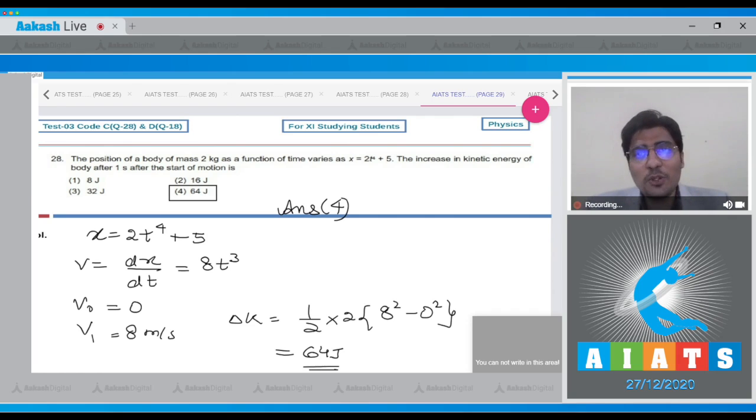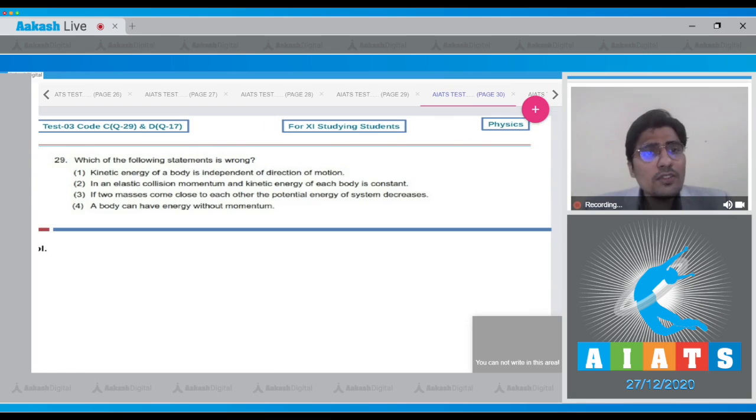Now, moving on to question number 29. Question 29 says, which of the following statement is wrong? So 4 statements are given to us. Kinetic energy of a body is independent of the direction of motion. Dear student, this is a correct statement because kinetic energy is a scalar and it simply depends on the speed and not the direction.